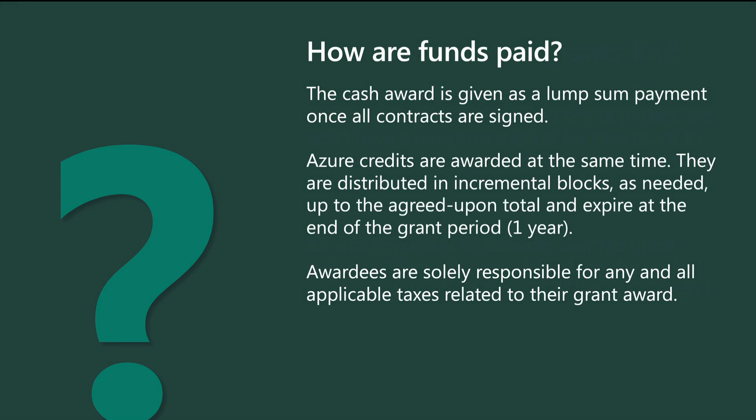How are the funds paid? The cash award is given as a lump sum payment once all contracts are signed. Universities typically receive this money as a cash gift with a letter directing it to be specifically applied to the project. Azure credits are awarded at the same time, distributed in incremental blocks as needed, up to the agreed upon total, and expire at the end of the grant period of one year. Awardees are solely responsible for any and all applicable taxes related to their grant award.